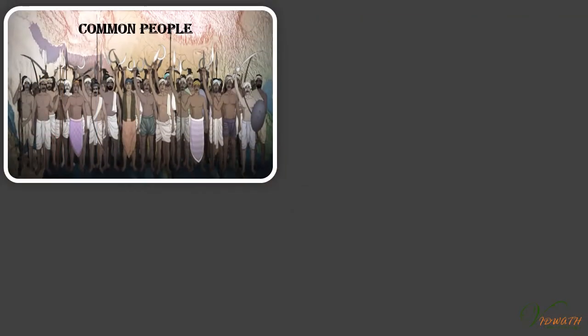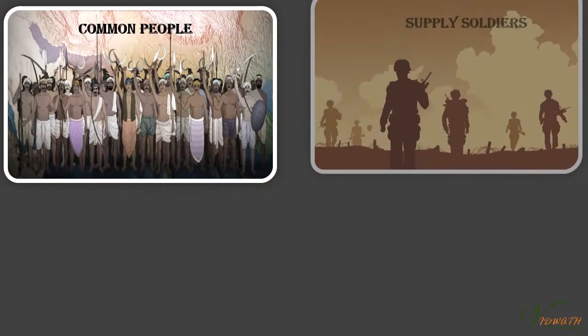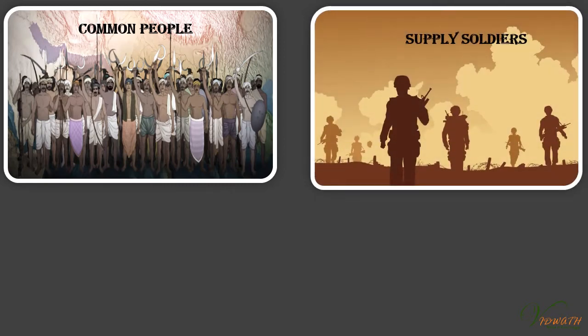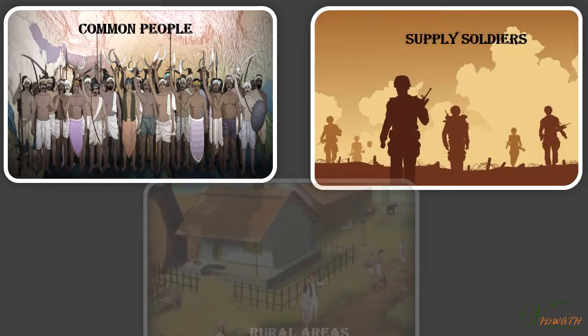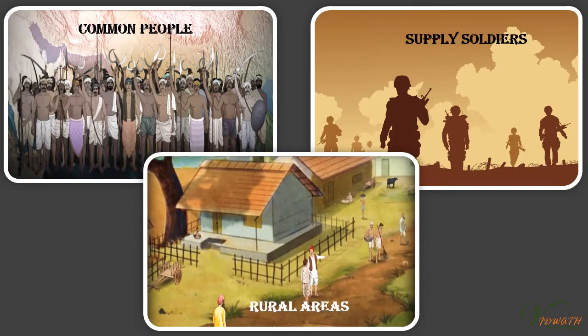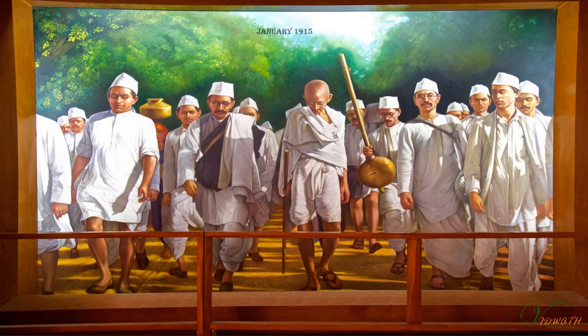Villages were called upon to supply soldiers, and forced recruitment in rural areas caused widespread anger. Mahatma Gandhi returned to India in January 1915, introducing his method which he called Satyagraha.